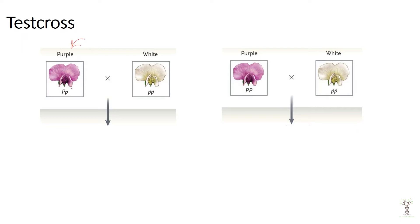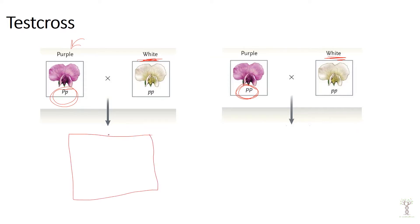Here we have a purple plant — let's suppose it is a heterozygote — and here we have a purple plant that is homozygous dominant. How could we figure out the genotype? We can cross it with a homozygous recessive plant. If the genotype is heterozygous and we cross it with a white plant, what are the offspring going to be? Let's do a quick Punnett square.